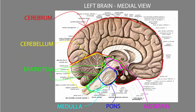Looking at a medial view of the brain: on top is the cerebrum, behind the brainstem is the cerebellum, and here is the brainstem. The part connected to and just inferior to the cerebrum is the midbrain. Just inferior to the midbrain is the pons, and just inferior to the pons is the medulla — pronounced either 'medulla' or 'medulla,' I've heard it both ways.